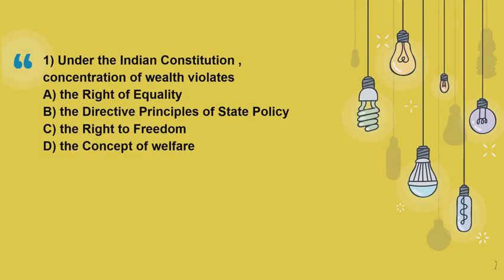Question 1: Under the Indian Constitution, concentration of wealth violates — this is a direct question from the Constitution. Article 39C of the Indian Constitution talks about prevention of concentration of wealth, which is under Part 4 of the Indian Constitution. That is, it violates DPSP — Directive Principles of State Policy. So the correct option for this question is Option B: the Directive Principles of State Policy. Part 4 of the Indian Constitution, that is DPSP, contains Articles 36 to Article 51.